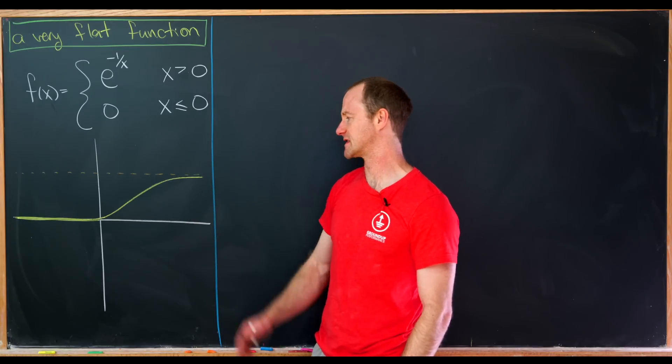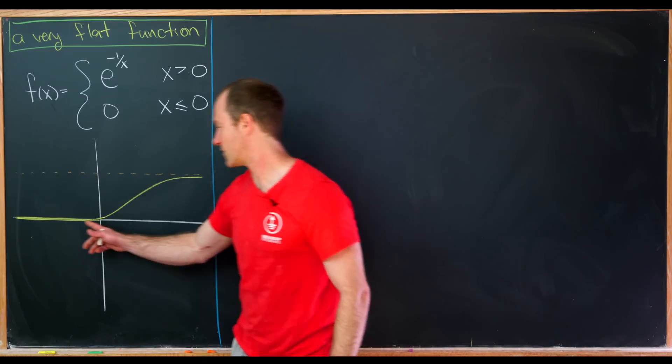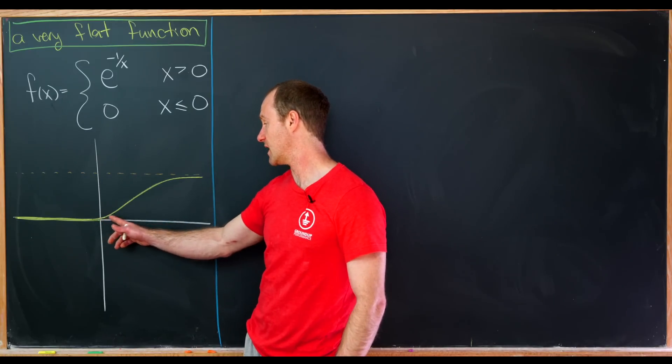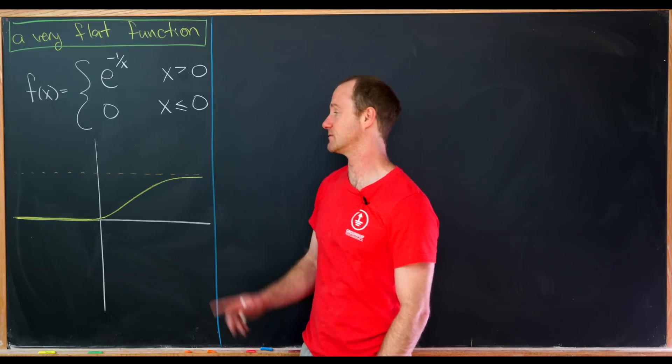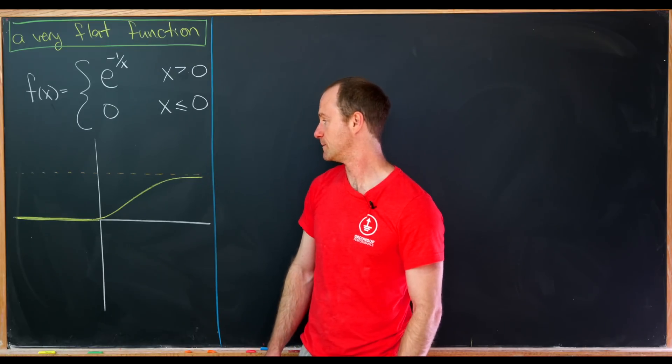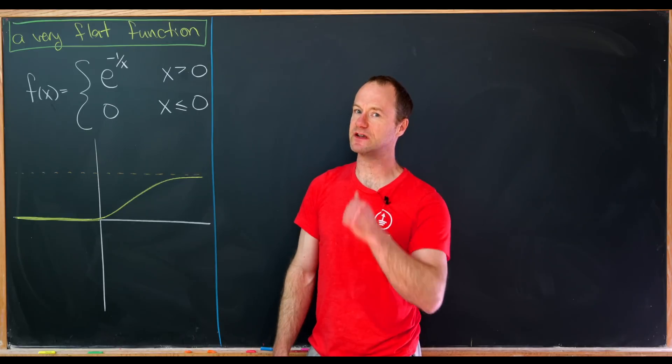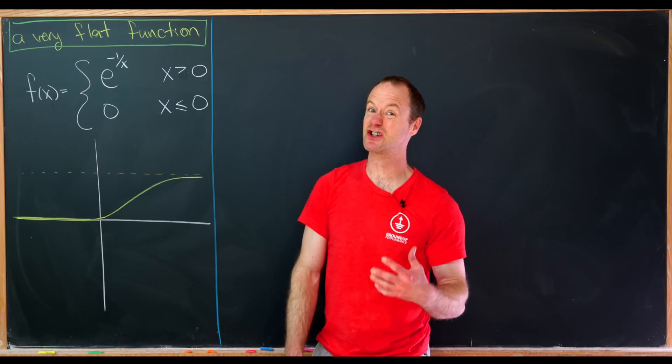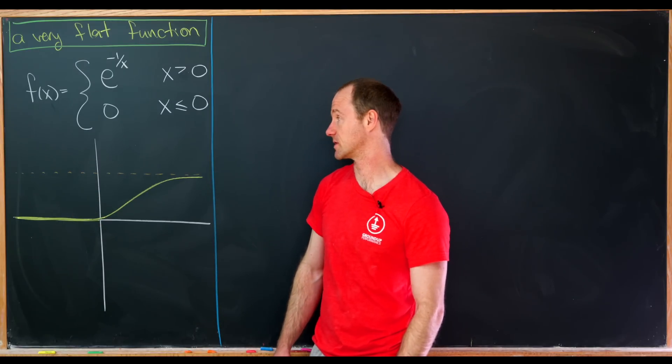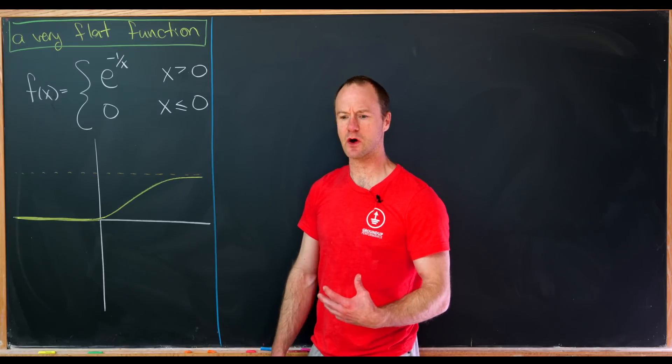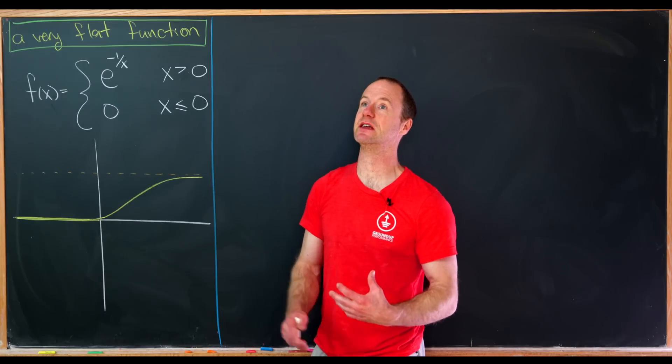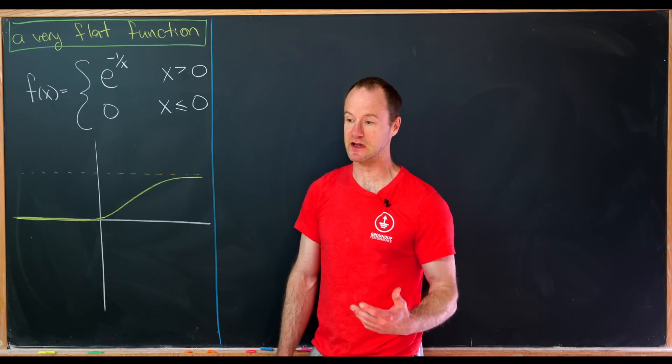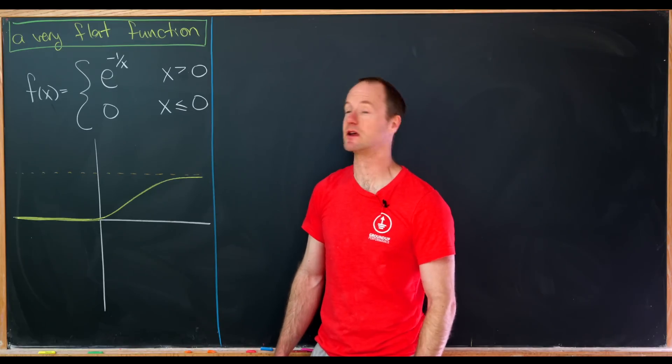So here's just a little sketch of this graph. Notice that the function is coincident with the x-axis up until the origin, and then it will eventually become asymptotic to the line y equals one. The really important thing to note here is that it's not asymptotic to the x-axis in the negative direction. It's actually equal to the x-axis in the negative x direction. So what's so interesting about this function? Well, as we'll see, it'll highlight one of the main differences between differentiability in the real numbers and differentiability in the complex numbers.